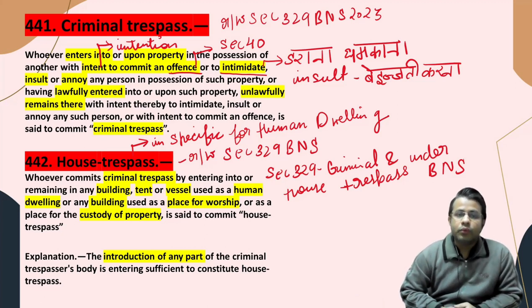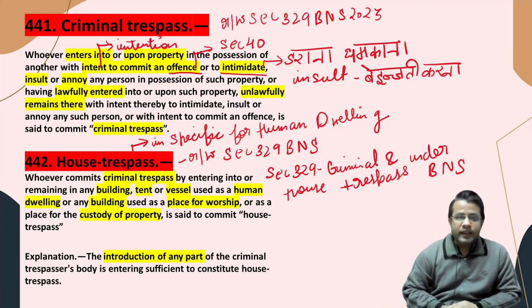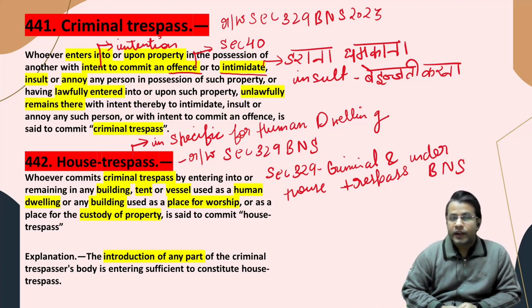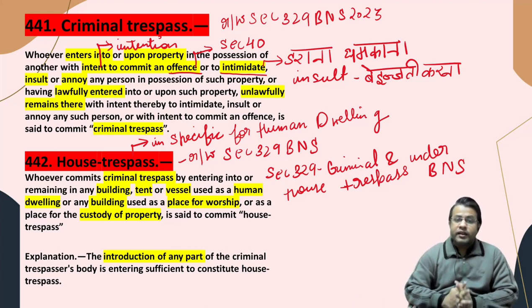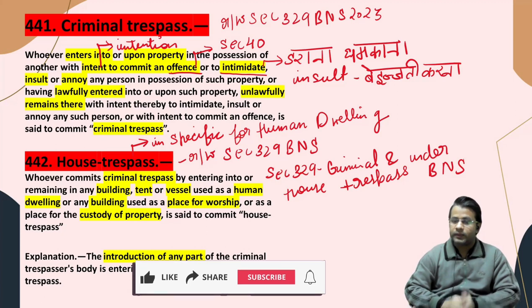Whoever enters into or upon any property in the possession of another with intent to commit an offence, or to intimidate, insult or annoy any person in possession of such property, or having lawfully entered into or upon such property, remains there with intent to intimidate, insult or annoy any such person, or with intent to commit an offence, is said to commit criminal trespass.